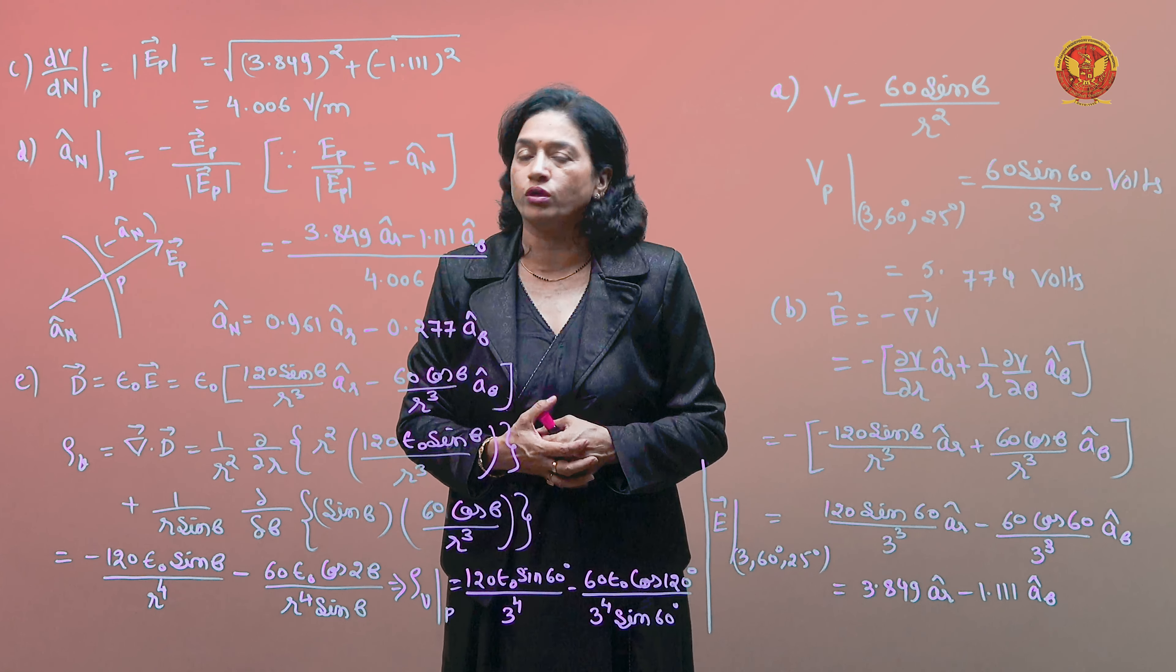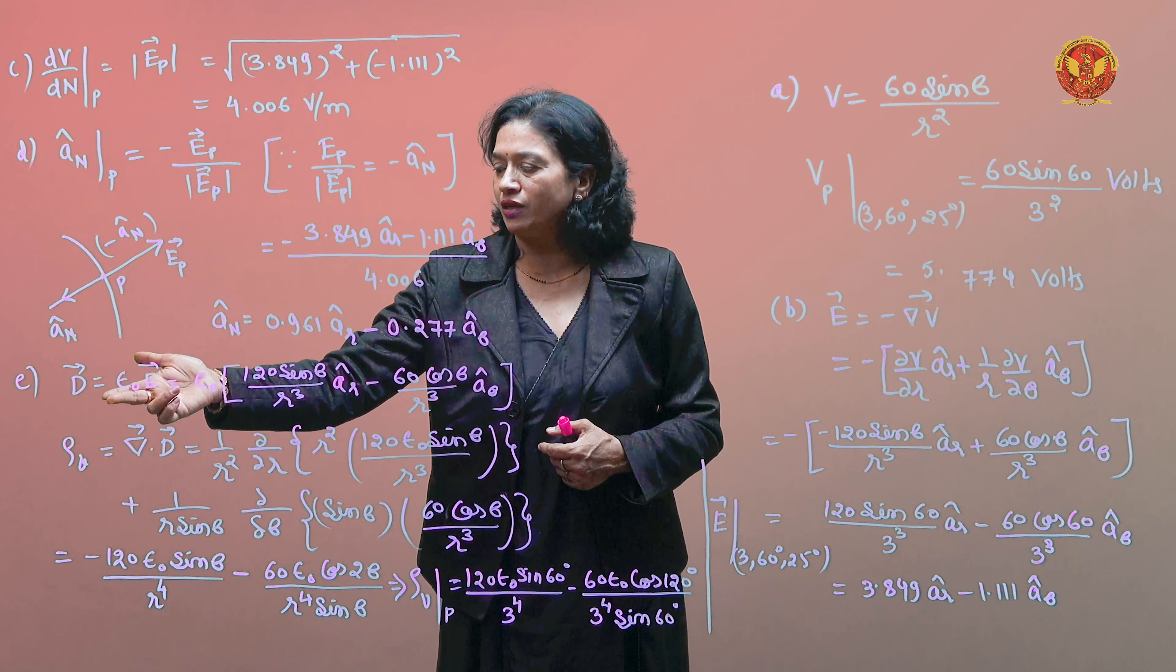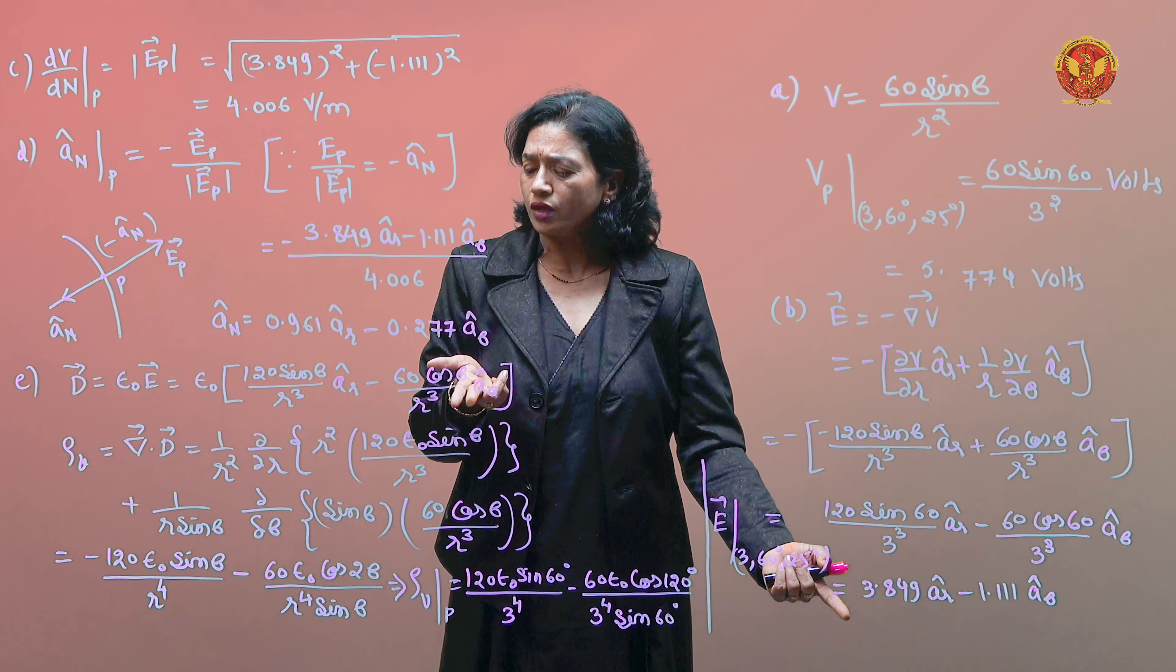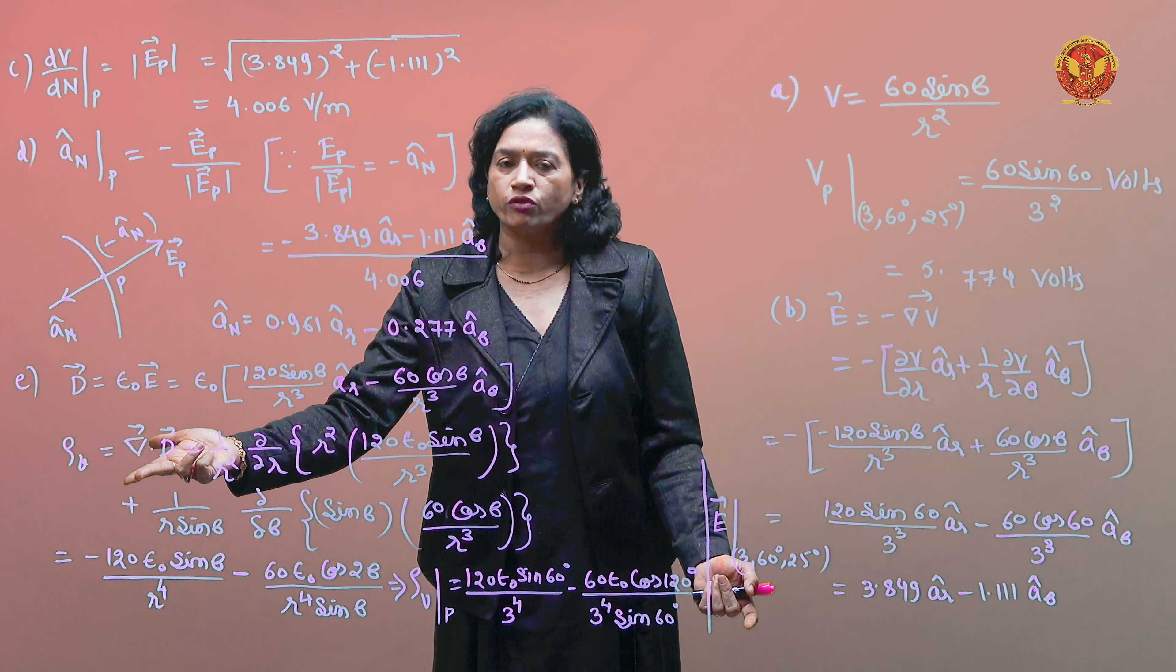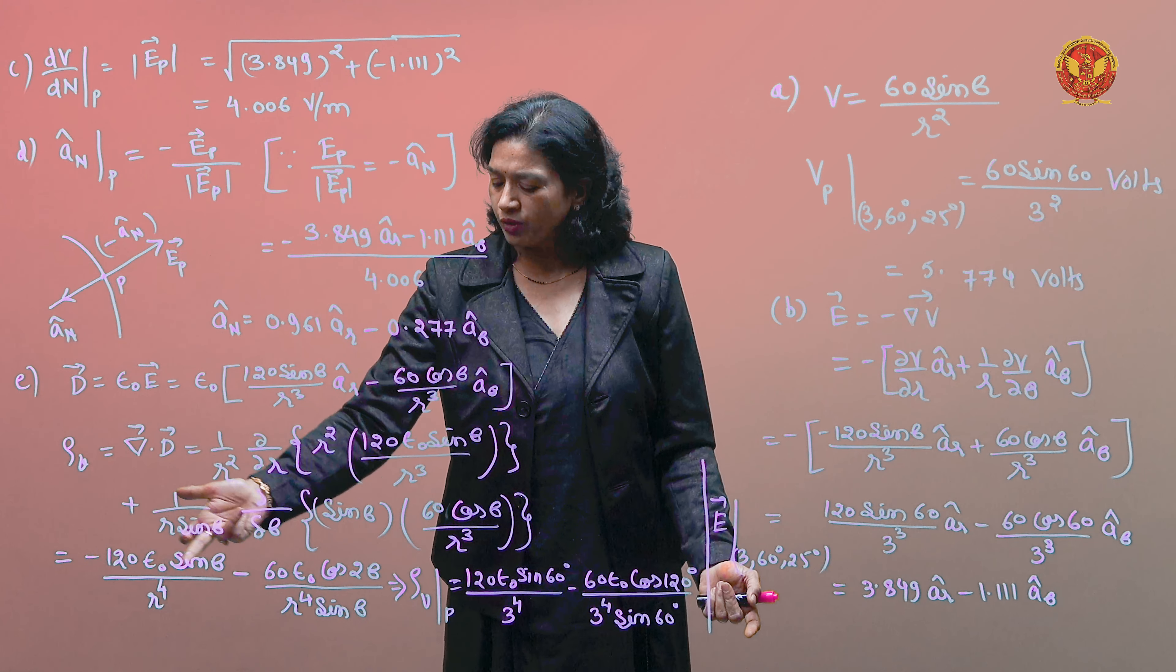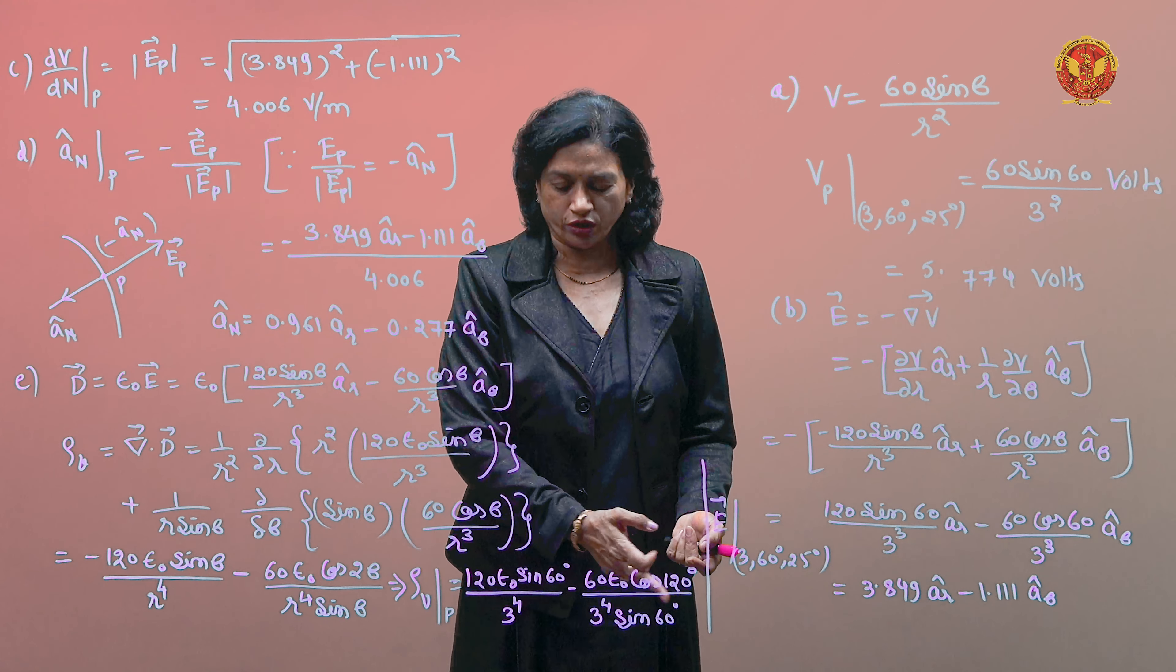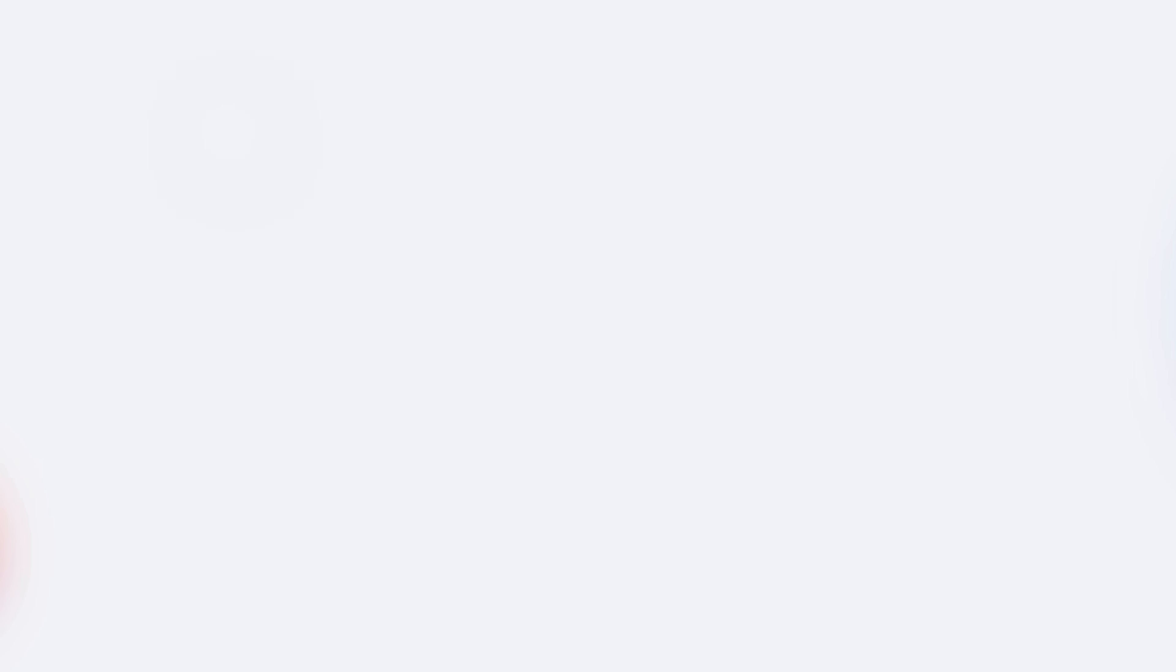Now we have asked rho v at P. We find the E expression. E is equal to epsilon naught times rho v. We find this in the spherical coordinate system. Now rho v at P: we substitute theta as 60 and r, we have this expression, and solving you have the rho v answer.